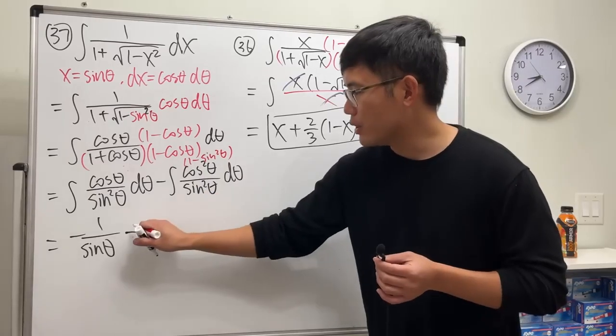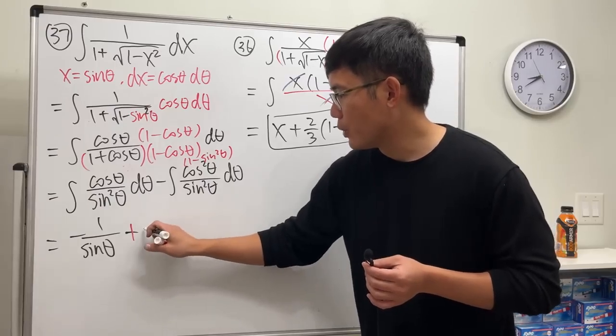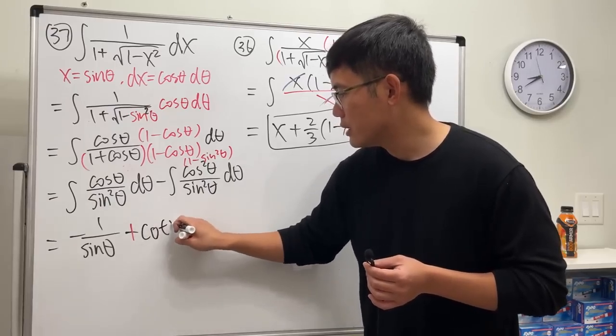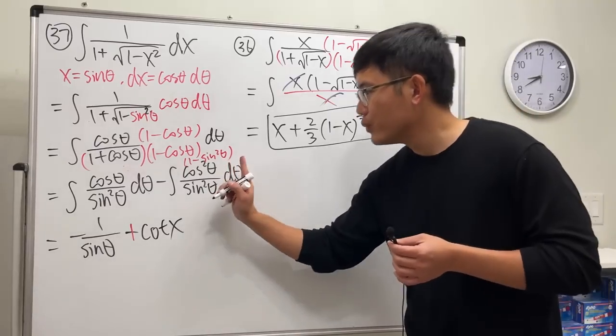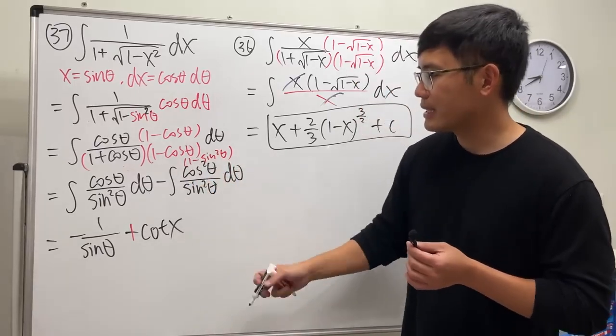But it's negative, so this right here will be a positive cotangent. Let me... cotangent theta. And then this over that is just one, negative negative is positive, so we just have...